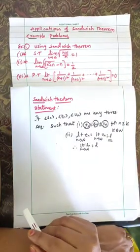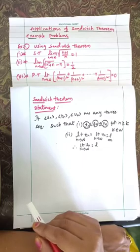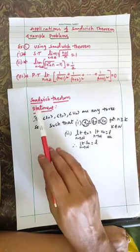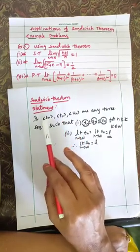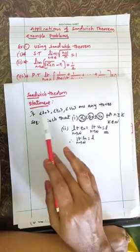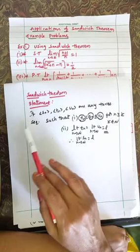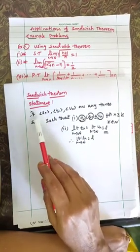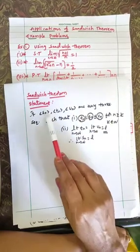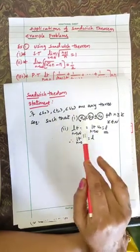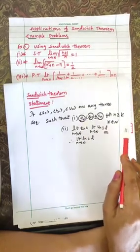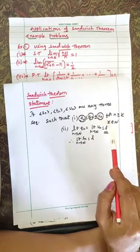Hello everyone, welcome back to math videos. In the previous video we learned what is sandwich theorem, the statement, and we proved this. Now I'll give a revision of the statement. If sn, tn, un are any three sequences and sn lies between the other two sequences where n is a positive integer, n is greater than or equal to k where k is any positive integer or natural number.